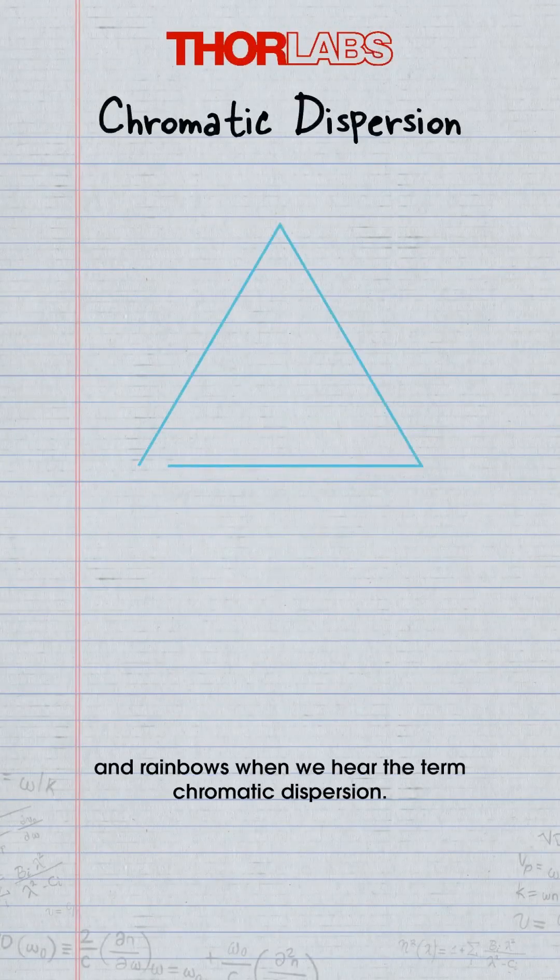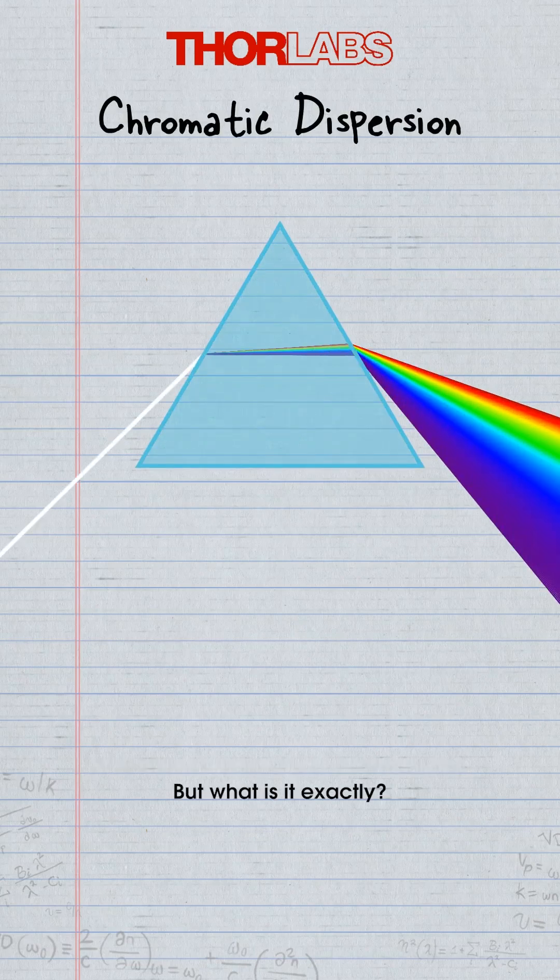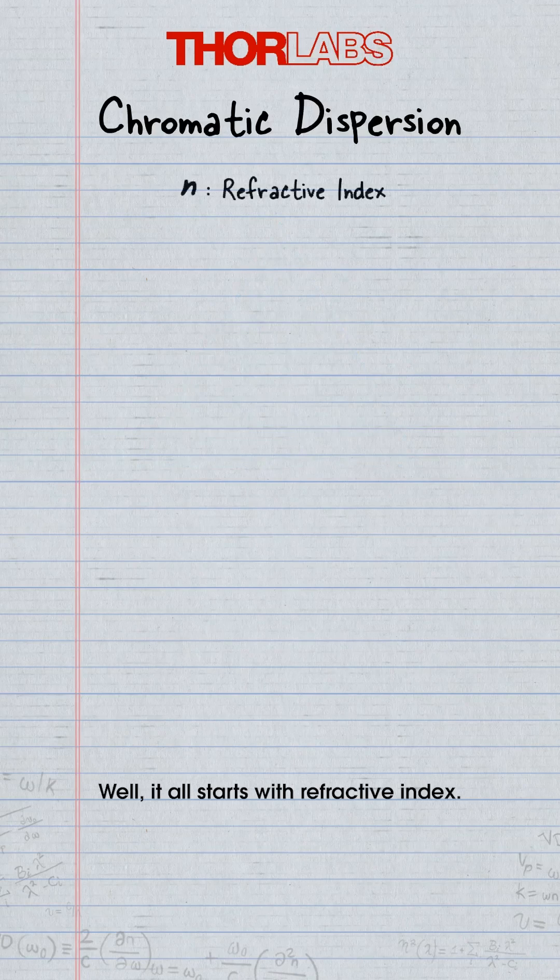We may think of prisms and rainbows when we hear the term chromatic dispersion, but what is it exactly? Well, it all starts with refractive index.